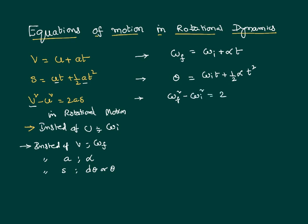So these are the equations of motion that we can use to study a body in rotational motion. Therefore, we can clearly see that in any of these equations of motion there are five variables: omega-I, omega-F, theta, alpha, and time T.